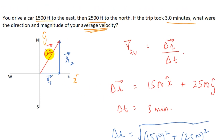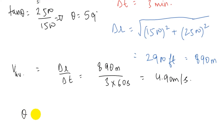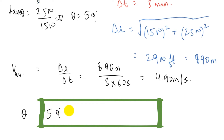The direction of average velocity is the same as that of the displacement vector. The angle theta satisfies tan(θ) = R2/R1 = 2500/1500. Solving, theta comes out to be nearly 59 degrees. So the direction of average velocity is 59 degrees North of East.